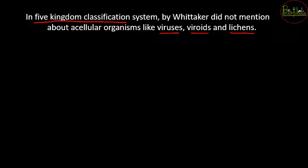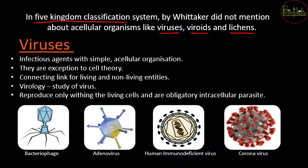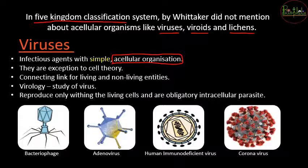Viruses are going to be infectious agents because they spread infections like coronavirus. They are very simple in their structure and most importantly they have acellular organization. That was the reason no scientists classified them under any of the kingdoms. They are even an exception to the cell theory, which you may have studied in your lower classes.